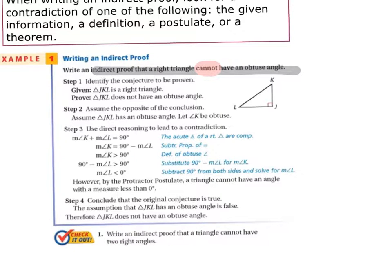Step three is to go through and state: if it can have an obtuse angle, one of the angles would be 90 degrees because it's a right triangle. The other two angles would have to sum to 90, which means individually they have to be less than 90. So you've worked to prove that it cannot have an obtuse angle.